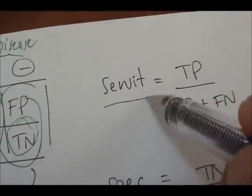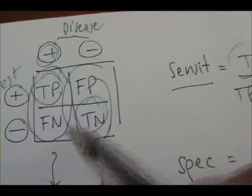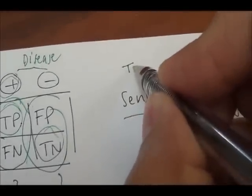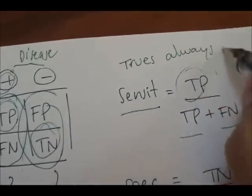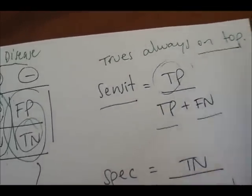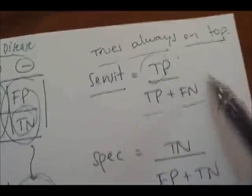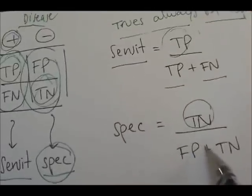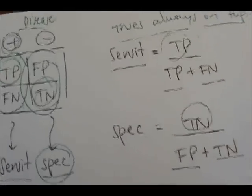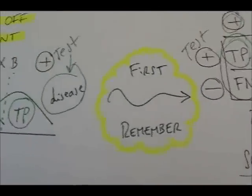To calculate sensitivity, we use true positive over true positive plus false negative. To calculate specificity, we use true negative over true negative plus false positive. The key thing to remember is that the trues are always on top.